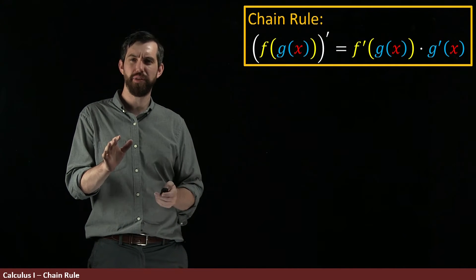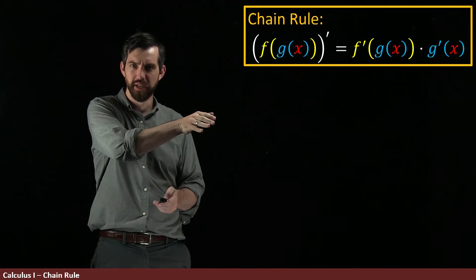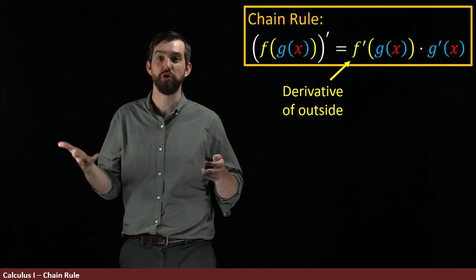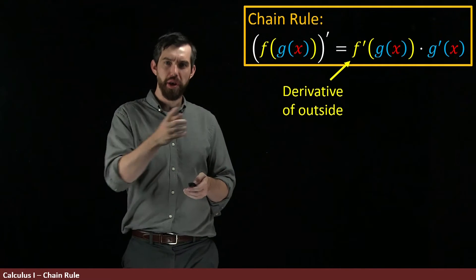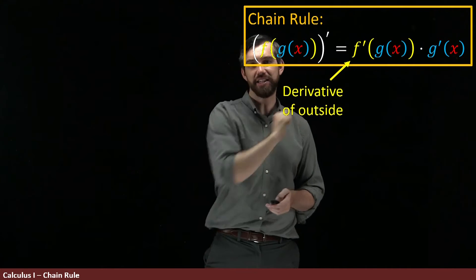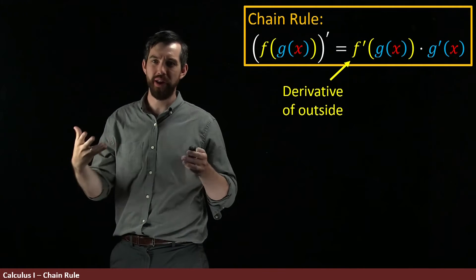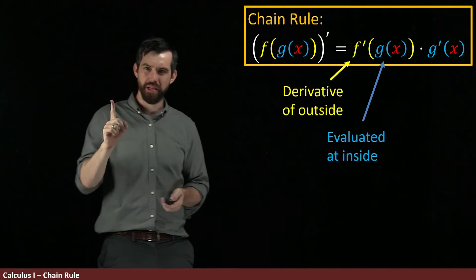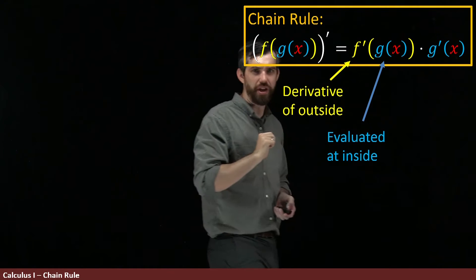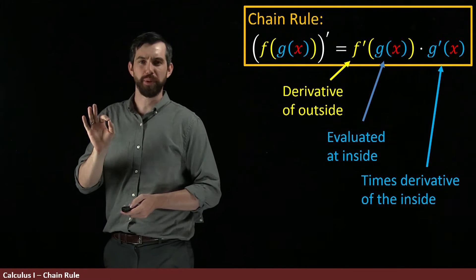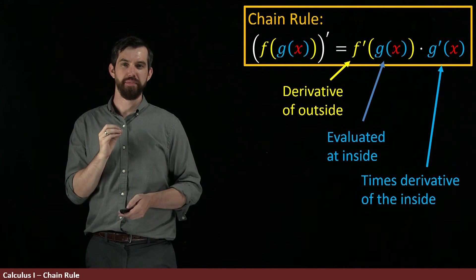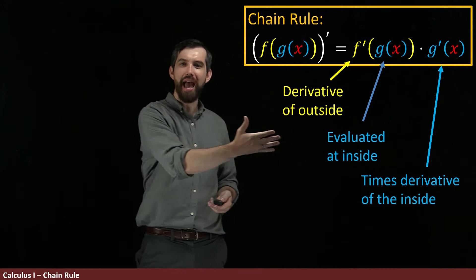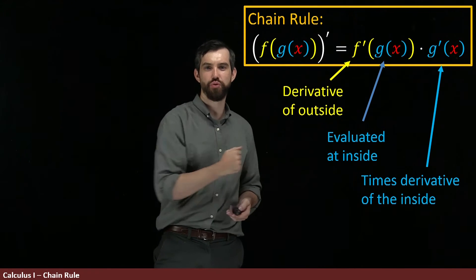That is, what we have is three different components. The first, the f prime, is the derivative of the outside function. But notice it's the derivative of f at something - derivative of f evaluated at this g of x. So it's the derivative of the outside evaluated at the inside. And the third component is times this derivative, so this is multiplied by the derivative of the inside. So the chain rule has these three outputs: the derivative of the outside at the inside times the derivative of the inside.